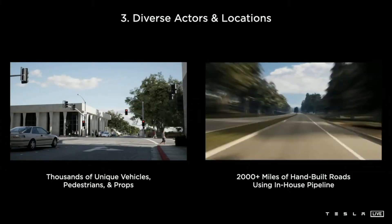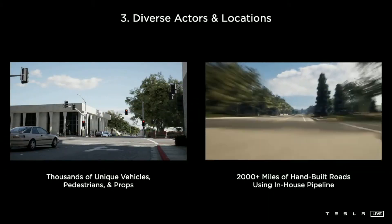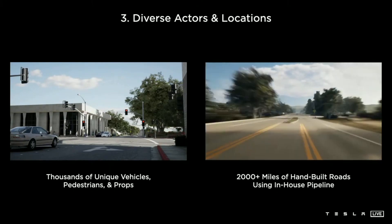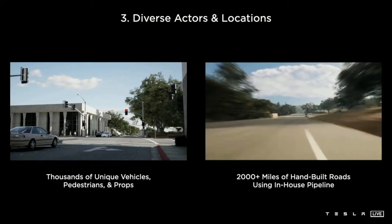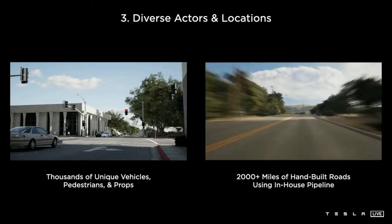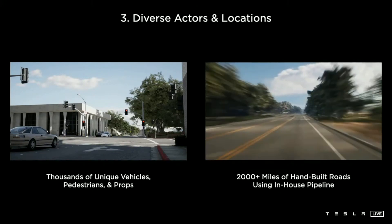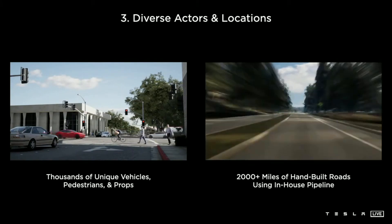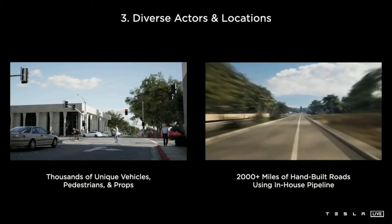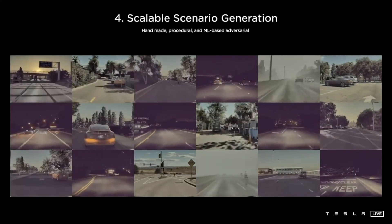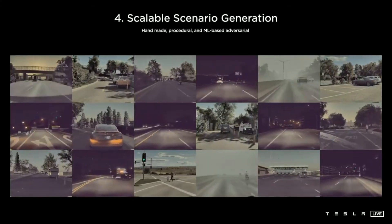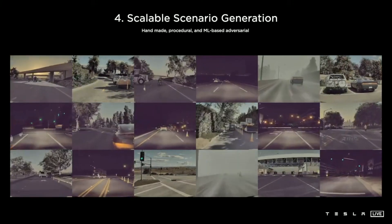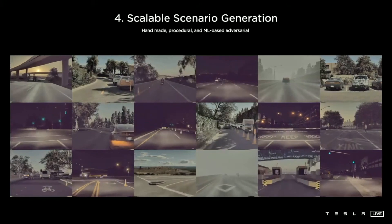We have a lot of different locations mapped and created for these environments. We have actually 2,000 miles of road built — almost the length of the roadway from the east coast to the west coast of the United States. In addition, we have built efficient tooling to build several miles more in a single day for a single artist. But this is just the tip of the iceberg — most of the data we use to train is created procedurally using algorithms, as opposed to artists making simulation scenarios.